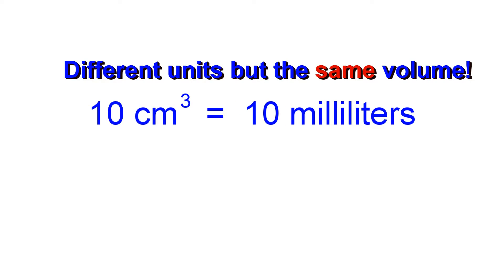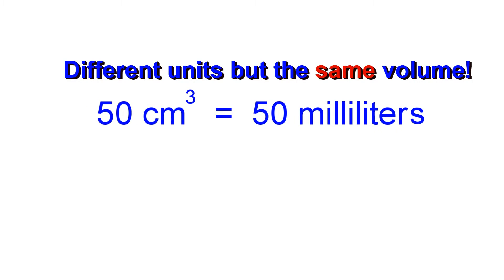So if you have a volume of 10 cubic centimeters, it will be equal to a volume of 10 milliliters. And if you have a volume of 50 cubic centimeters, it will equal a volume of 50 milliliters.